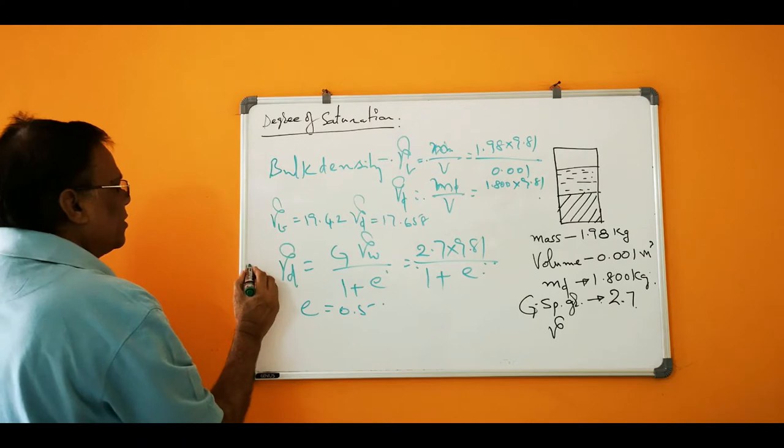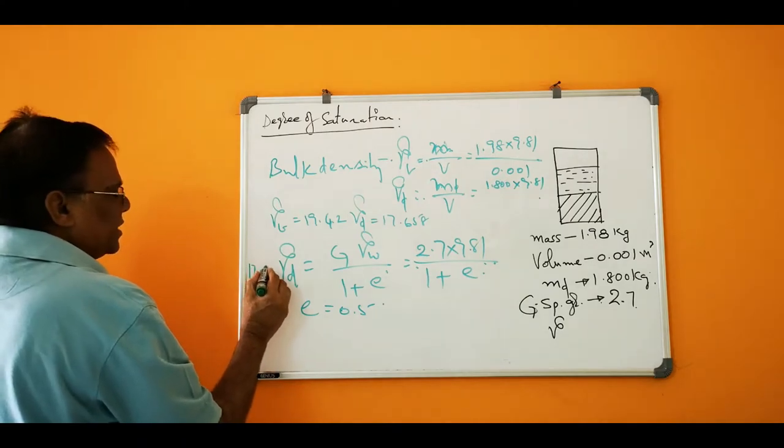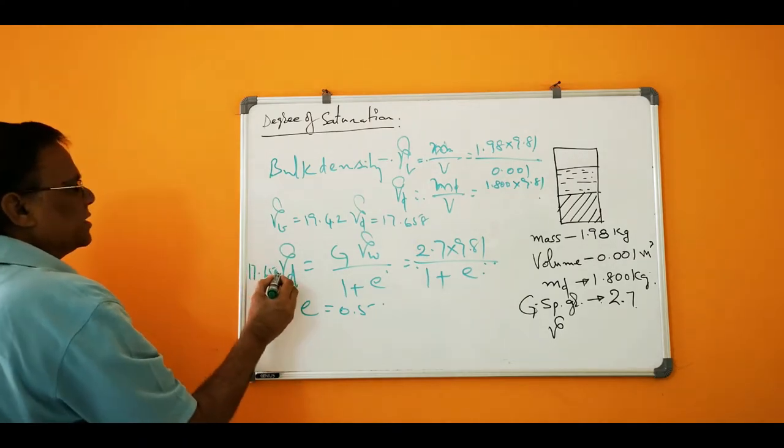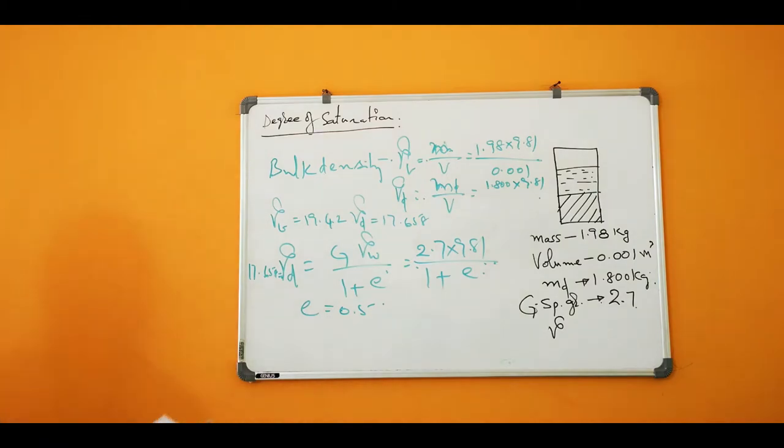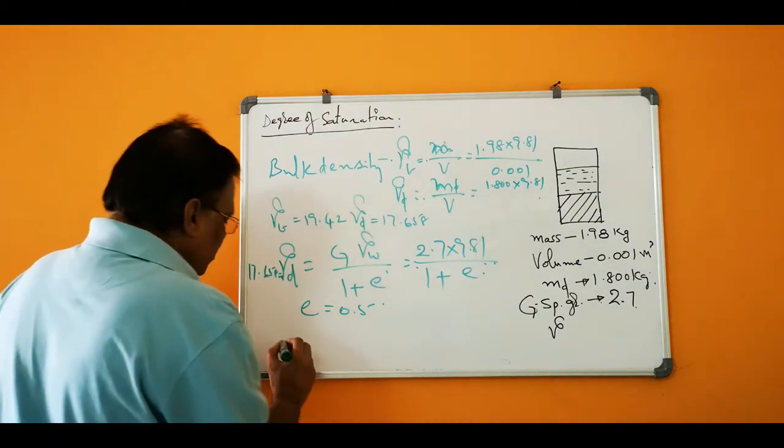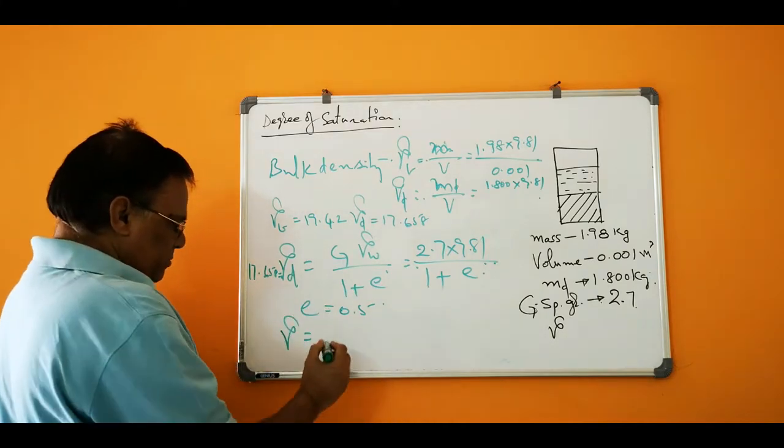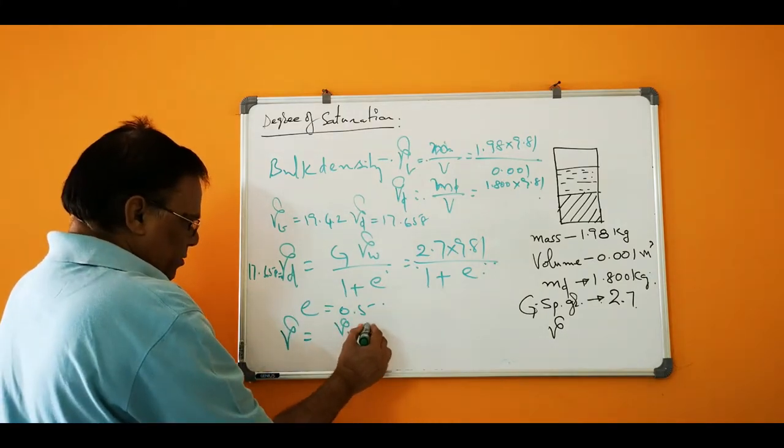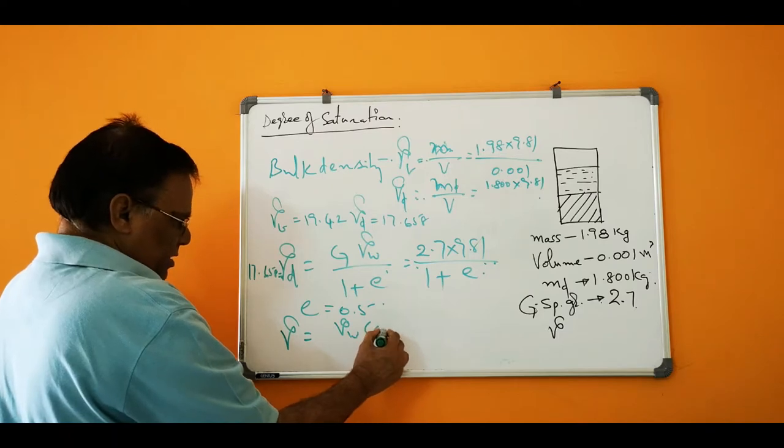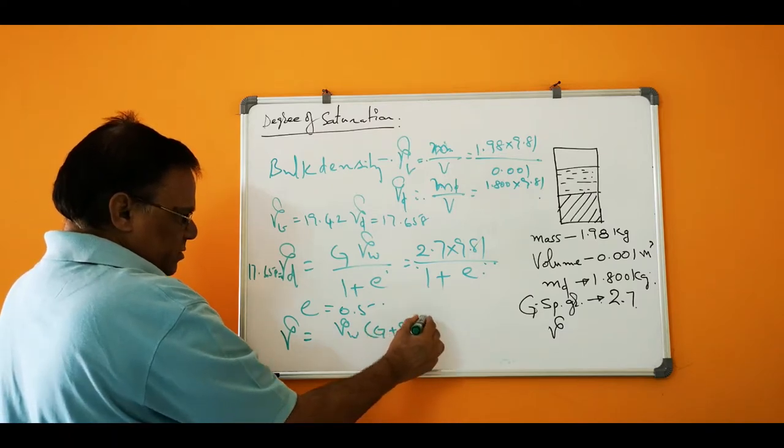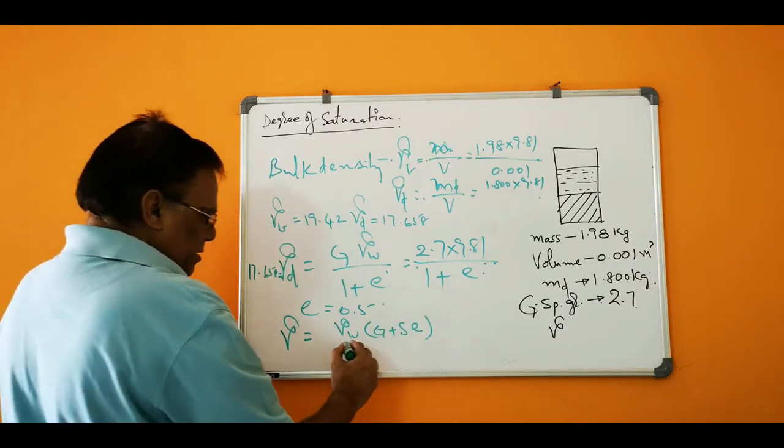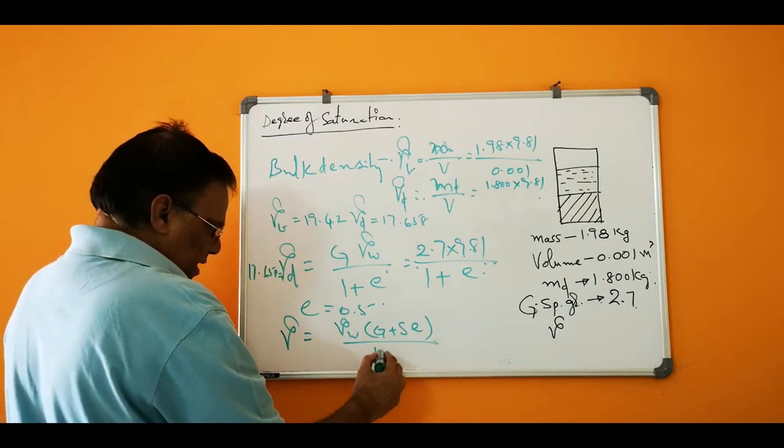This gamma D, if you make it 17.658 equal to, then the natural condition is equal to gamma is equal to gamma W into G plus S E by 1 plus E.